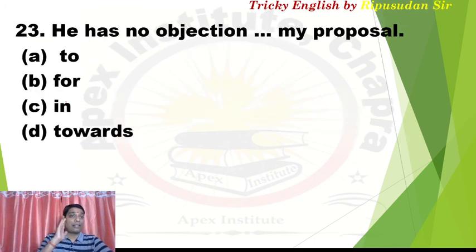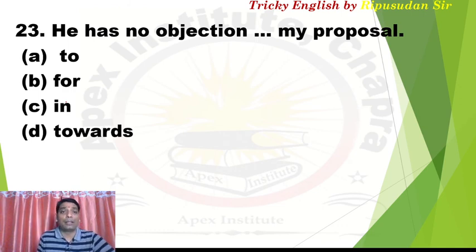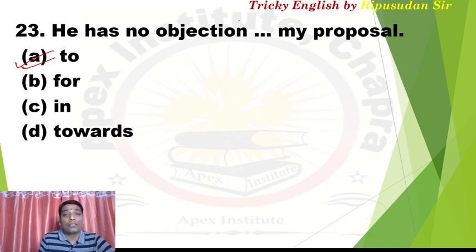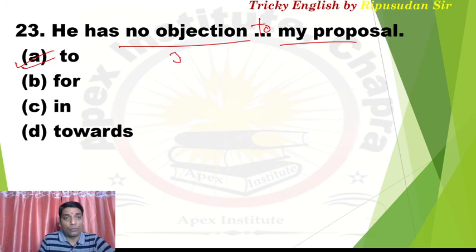Question 23: 'He has no objection dash my proposal.' The fixed preposition after 'objection' is 'to' — so 'he has no objection to my proposal', meaning he has no objection to my proposal. 'Objection' is the abstract noun of 'object', and in Hindi it means 'aapatti'.